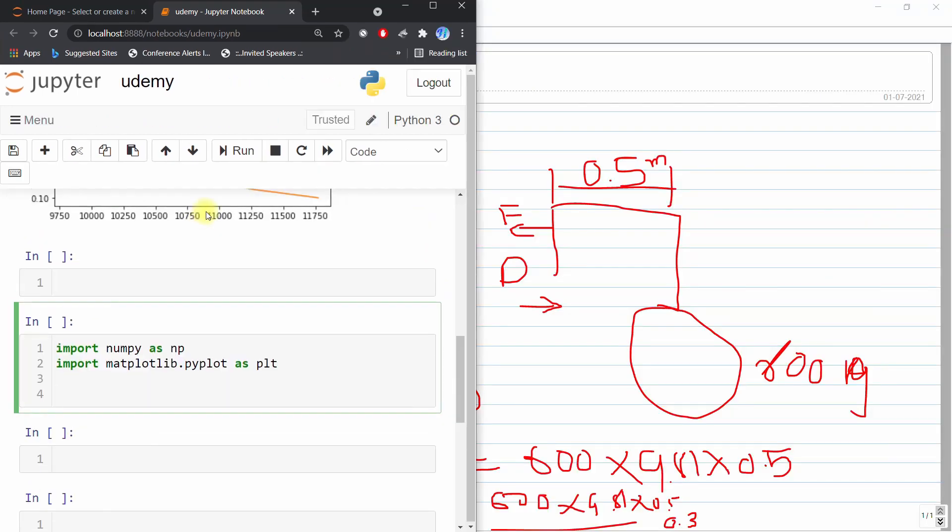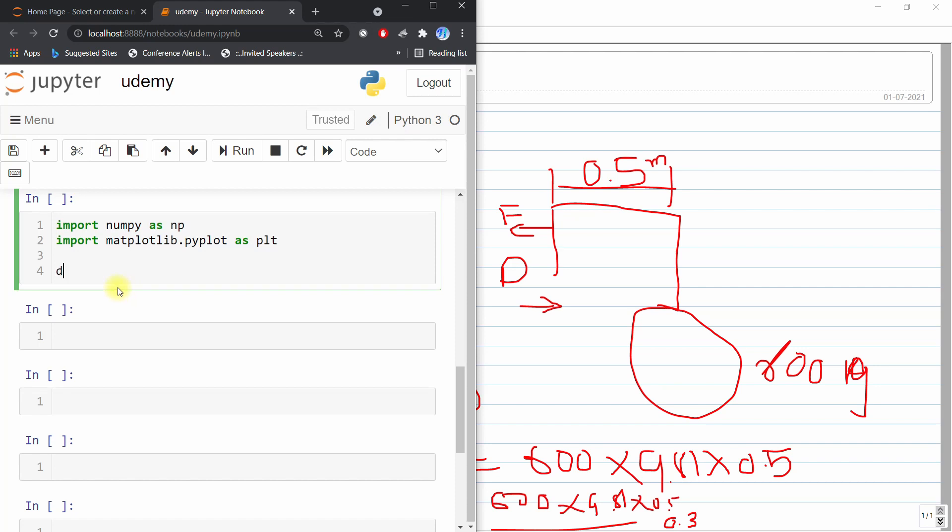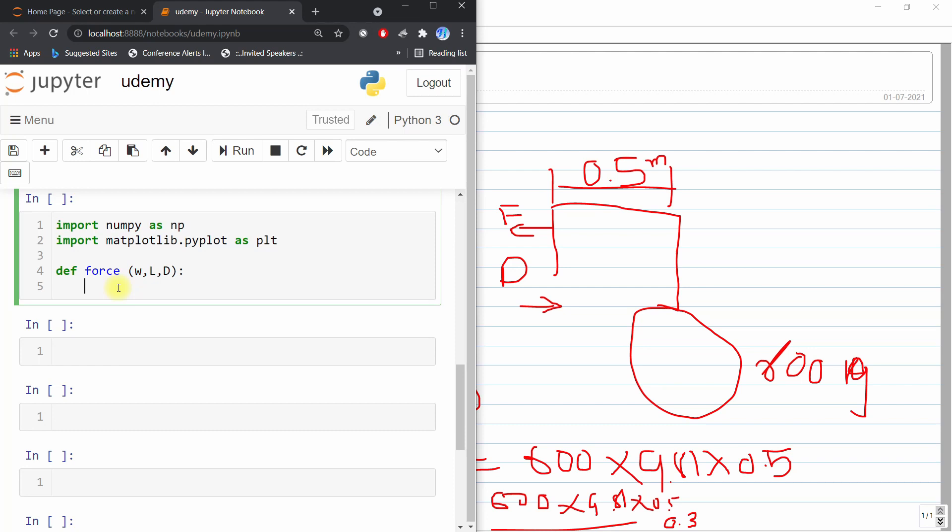Now we will define our function, def force, and we will define w, small w, length, and this d length and we will semicolon it.